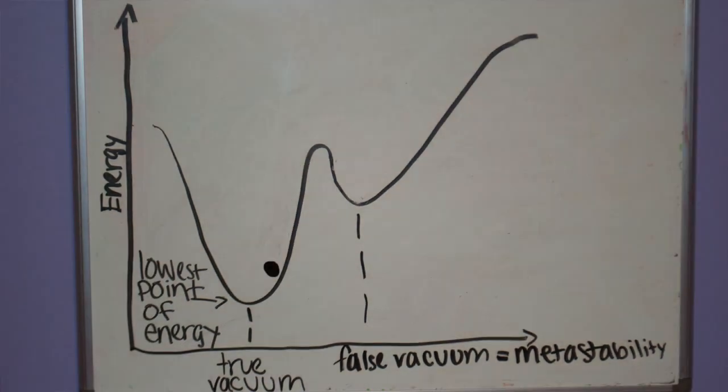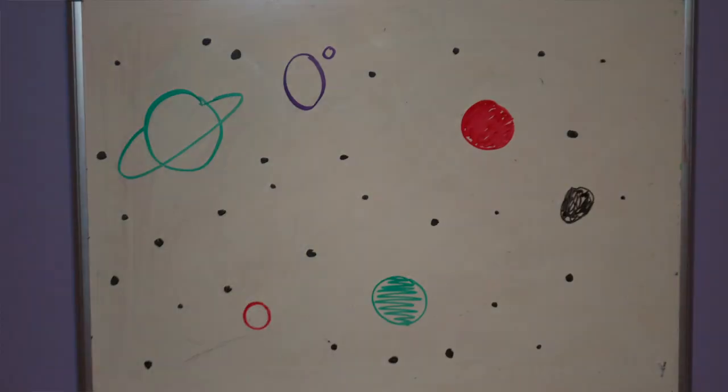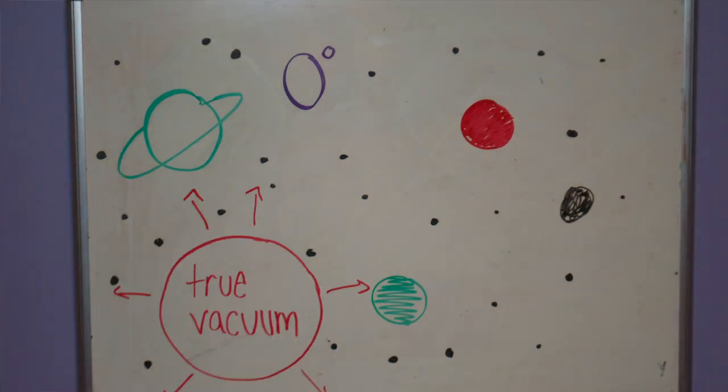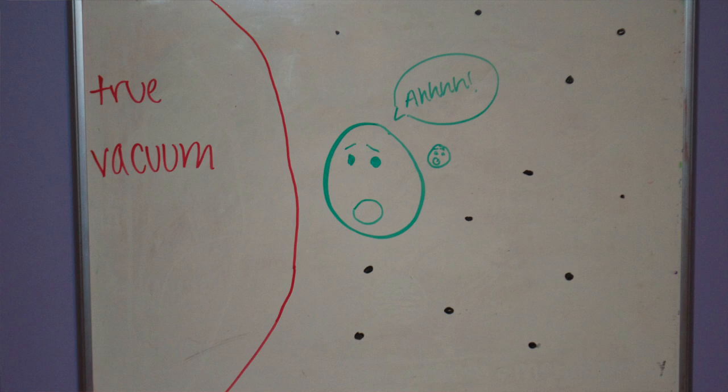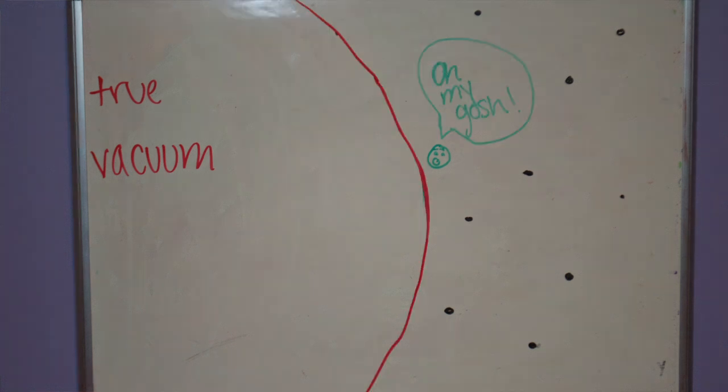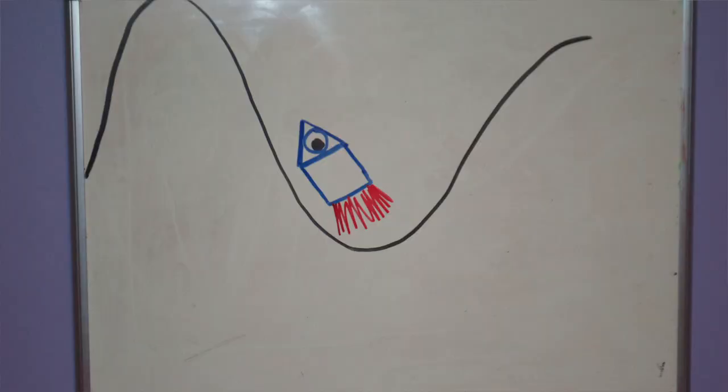If this happens, a bubble of true vacuum would form at some point in the universe and start to expand. It would move at the speed of light and engulf the whole universe. Anything the bubble touches would be obliterated. It would essentially erase life, chemistry, and even physics as we know it. However, it would take an astronomical amount of energy for the Higgs field to get around this barrier.